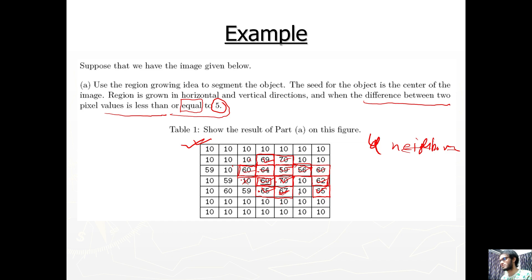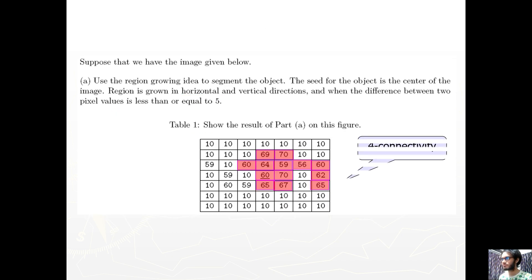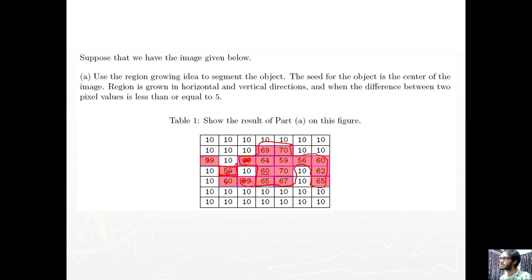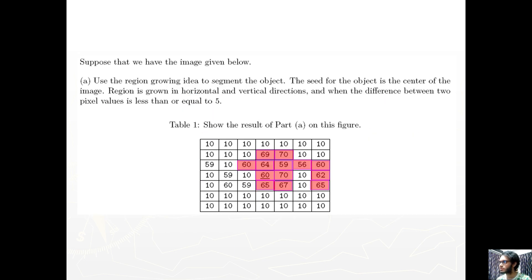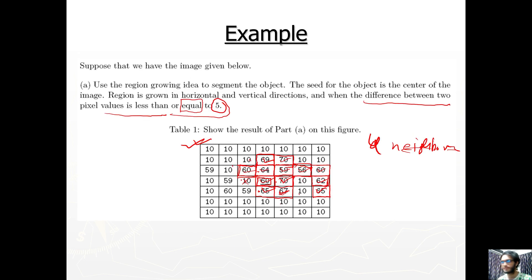Diagonal pixels are not connected under 4-connectivity, which may not properly define the region boundary. Using 8-connectivity gives a better final result for the region growing algorithm. This concludes the overview of the region growing algorithm and connectivity options.